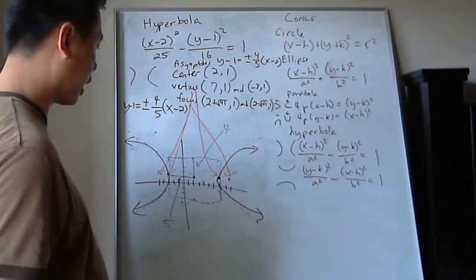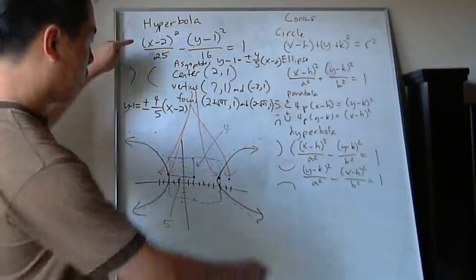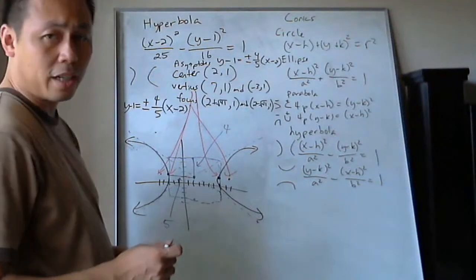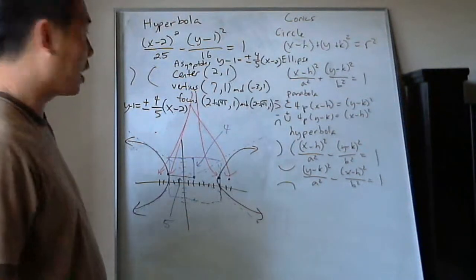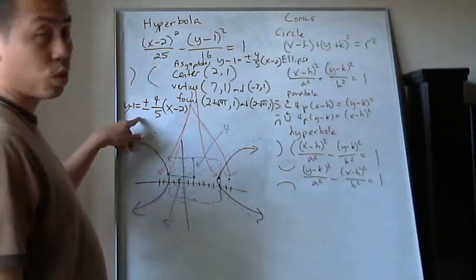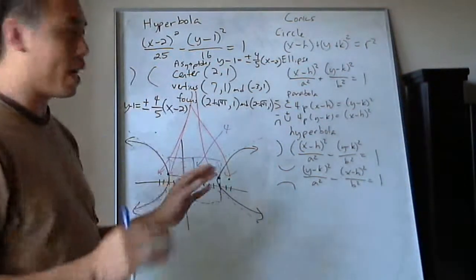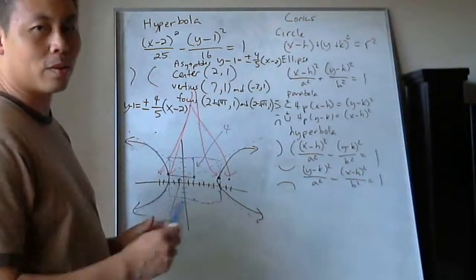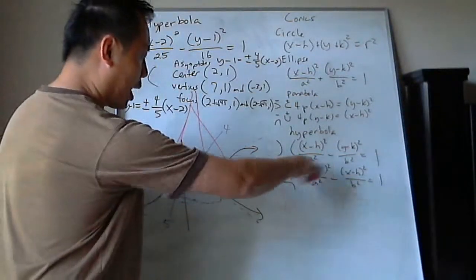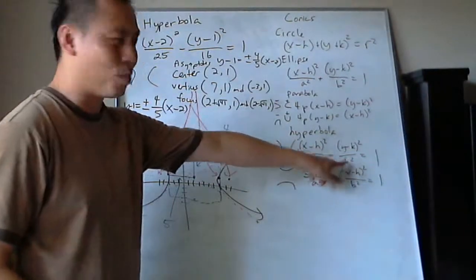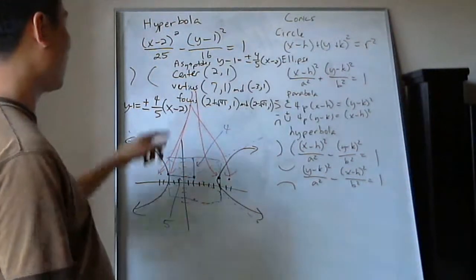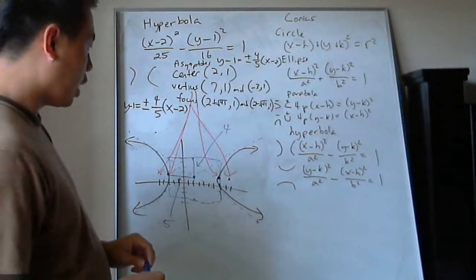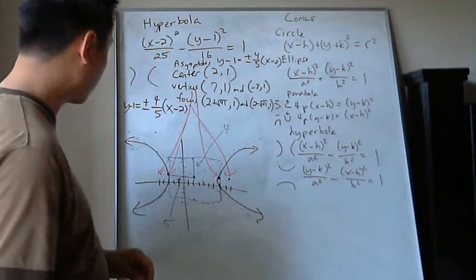X always goes left and right, Y always goes up and down. If needed, I can do an example with the Y-first form — everything is the same except it opens up and down, and you still use rise over run for the asymptotes. That's the easiest way to remember asymptotes; it was one of the most confusing things for me growing up, with those a's and b's swapping around. Any questions, leave comments. I'm probably moving on to matrices and completing the square soon — thank you.